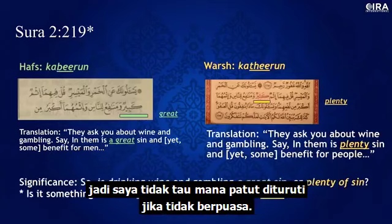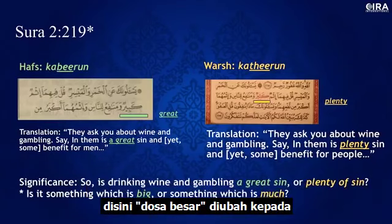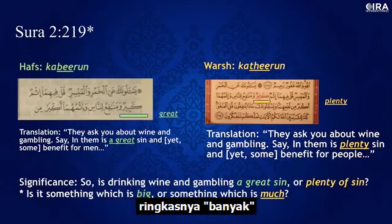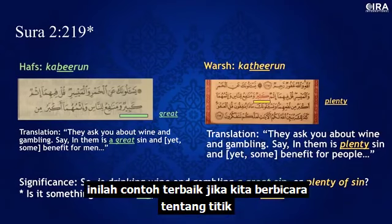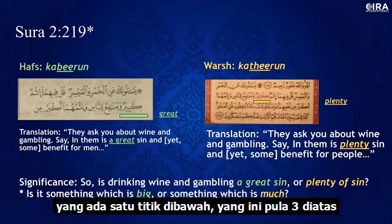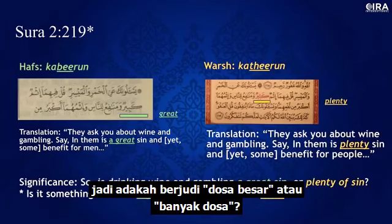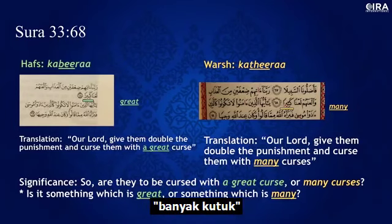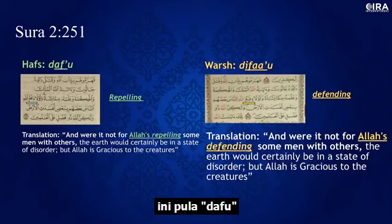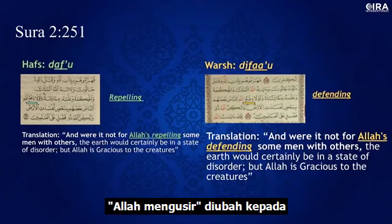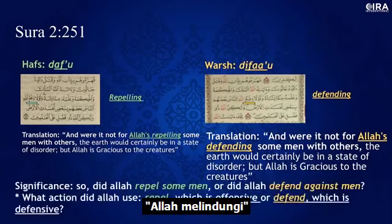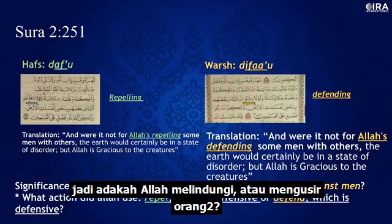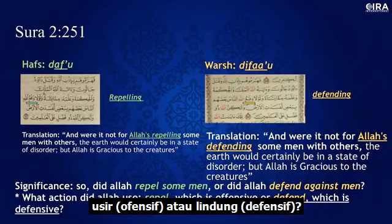I'd like to know which one I'm required to do if I don't fast. In another variant, 'in them is a great sin' becomes 'plenty' or 'many' — and this is a great example of the dotting issue, because in one version the dot is below, and in the other three are above. Is drinking wine and gambling a great sin or plenty of sin? In Surah 33:68, 'has been accursed them with a great curse' changes to 'many curses.' Then there's 'Dafu' — Allah's repelling of some men — changed to Allah defending. Did Allah repel or defend? Repelling is offensive; defending is defensive — what action did Allah use?